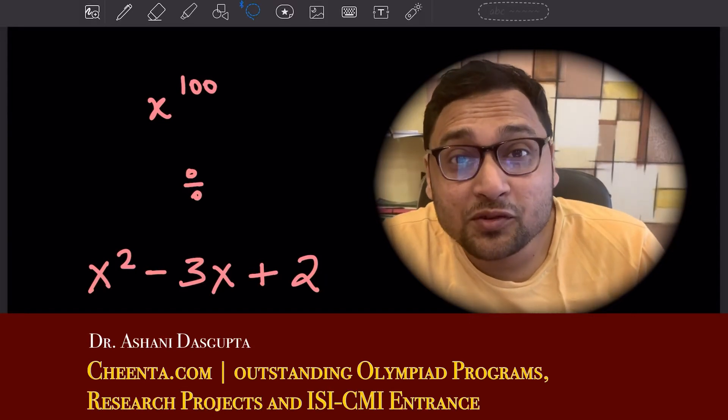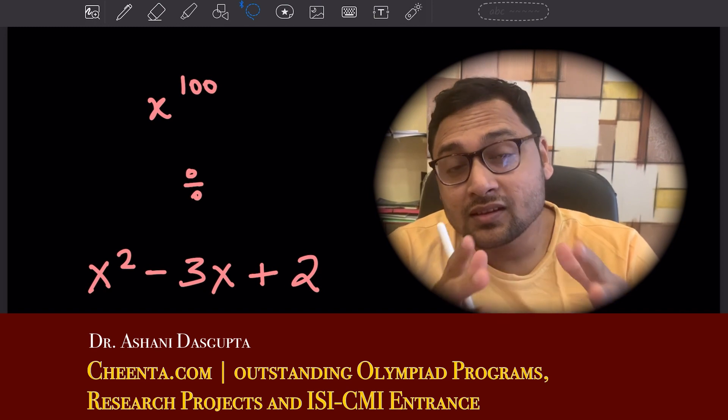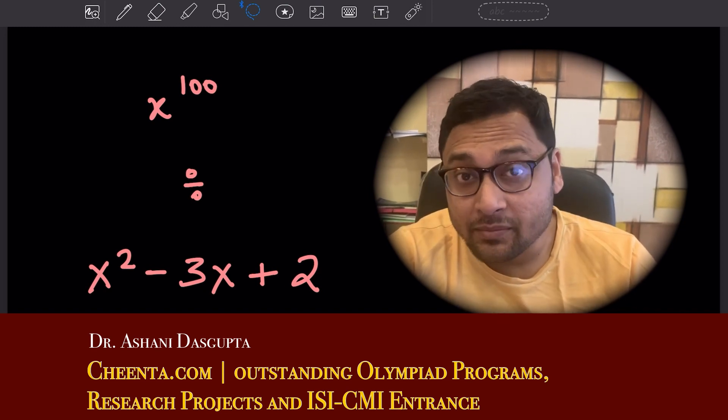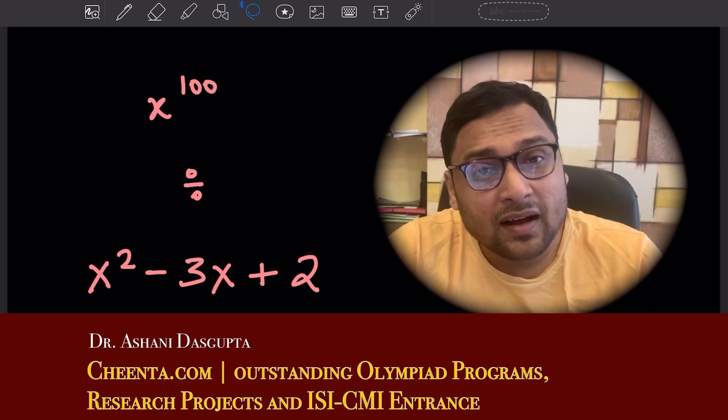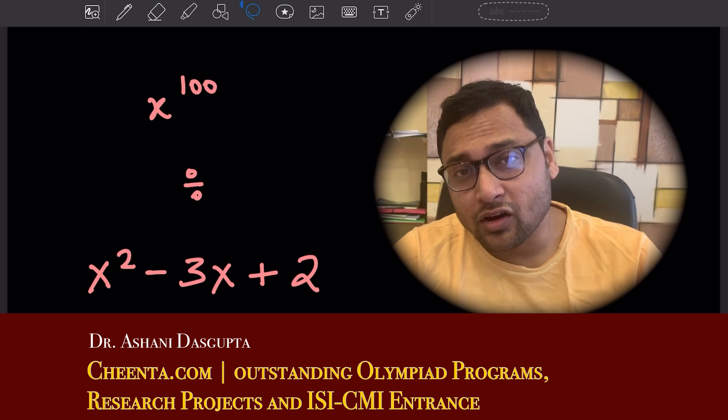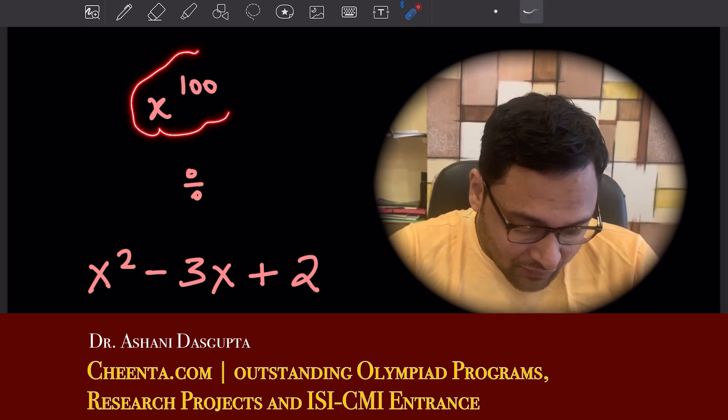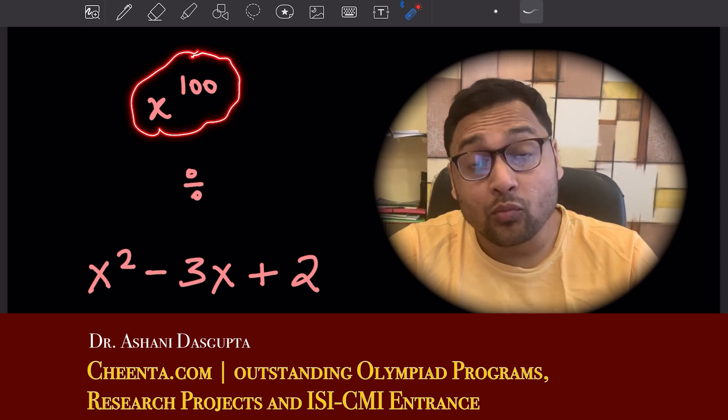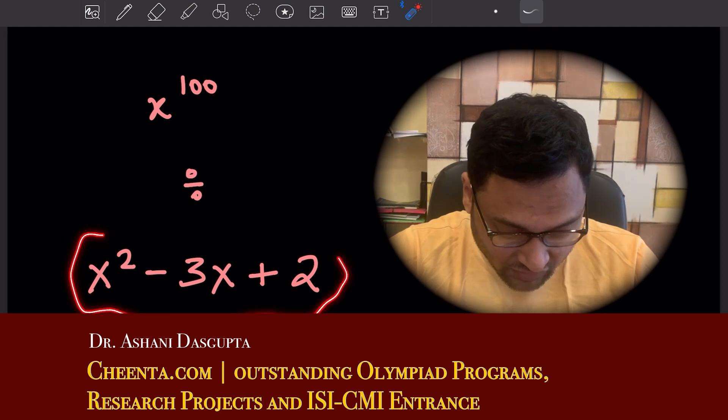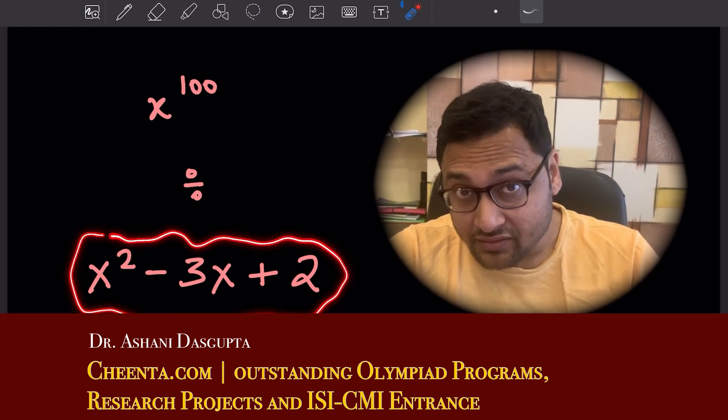Hello everyone, welcome to another beautiful problem in mathematics. This one is from algebra, suitable for ISI CMI entrances and mathematical olympiads such as IOQM, American math competitions. The problem asks: if you divide x to the power 100 by x squared minus 3x plus 2, what is the remainder?